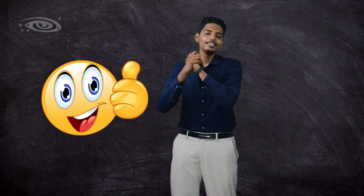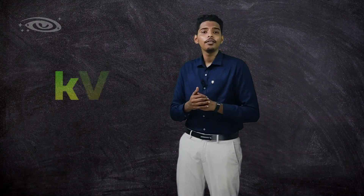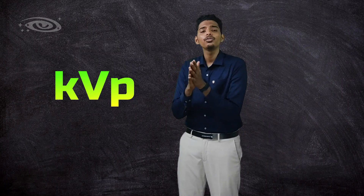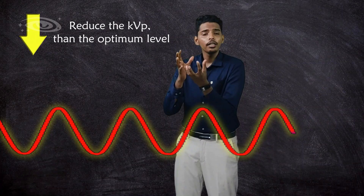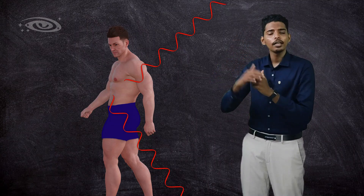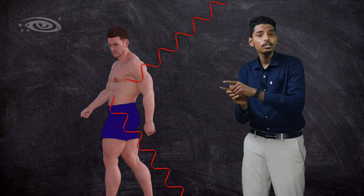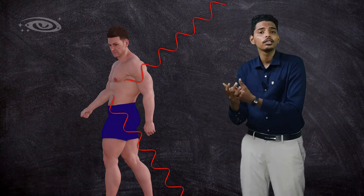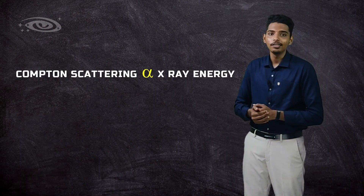There is one way to reduce Compton scattering: by increasing the kVp factor. You should not keep a low kVp — if you reduce the kVp, the X-ray energy is reduced and it produces more Compton scattering. Always keep a somewhat higher kVp to reduce Compton scattering. When you increase kVp, the X-ray does not interact with the outermost electron but instead goes directly to interact with the inner electrons, reducing Compton interaction. Compton scattering is inversely proportional to X-ray energy.